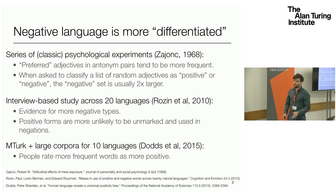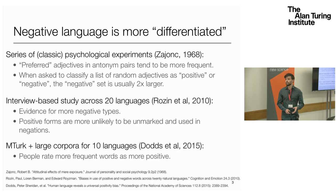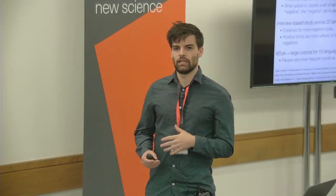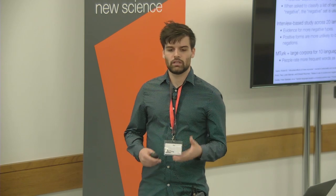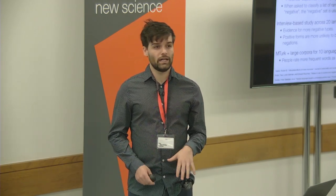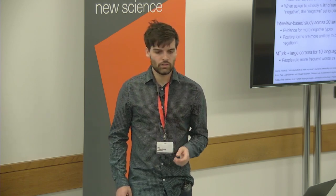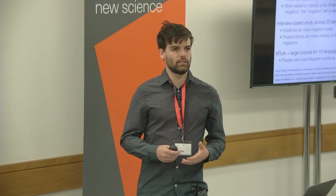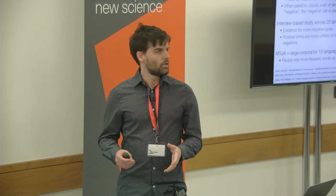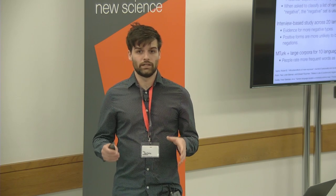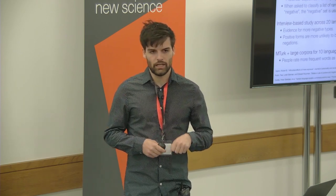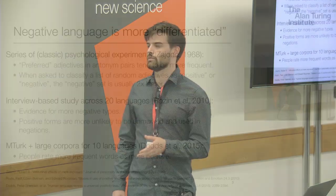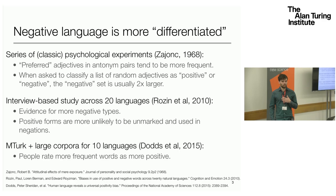What all these articles and papers are talking about is this idea that negative language is more differentiated. There seems to be a general trend across a wide variety of languages that there are more positive tokens. So if you sample a text, you'll generally see more positive words — especially more adjectives that tend to have positive sentiment. But if you look at the dictionary, there's a greater variety of negative lexical items. There are more distinct negative types; we have a greater diversity of negative words. But if you sample a text, you tend to see more positive phrases. This is sometimes called the idea of language being more differentiated in its negative sentiment.